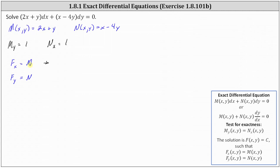This indicates that F(x, y) is equal to the integral of M, which is the quantity 2x plus y, dx. Just remember the constant of integration is not going to be just C — it's going to be a function of y.